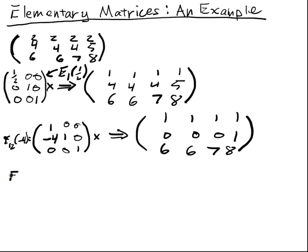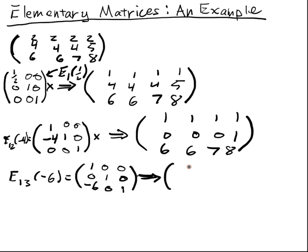Then we've got E13 of negative 6 is this matrix: 1, 0, 0, 0, 1, 0, negative 6, 0, 1. And we have 1, 1, 1, 1, 0, 0, 0, 1, 0, 0, 0, 1, 2. So that's the very first part.